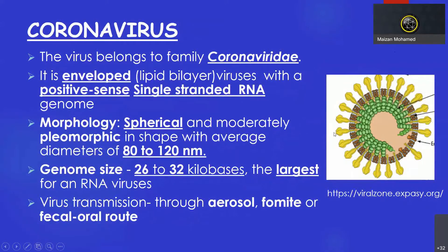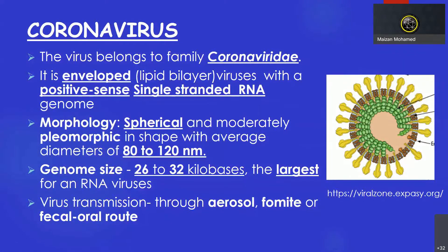Coronavirus belongs to the coronavirus family. It contains an envelope and a positive-sense single-stranded RNA, so this virus is an RNA virus. The morphology is spherical and sometimes pleomorphic, with an average diameter of 80 to 120 nanometers. The genome size is about 26 to 32 kilobases, which is the largest of the RNA viruses. Transmission is normally through aerosol, fomites, and fecal-oral routes.